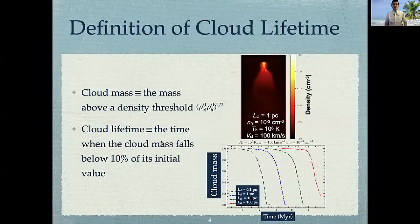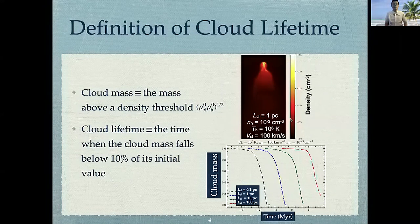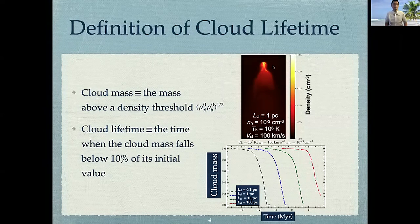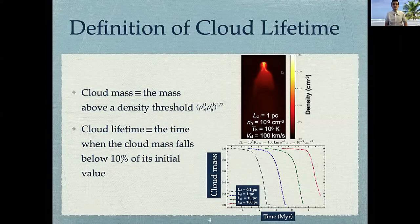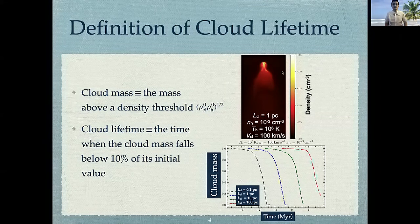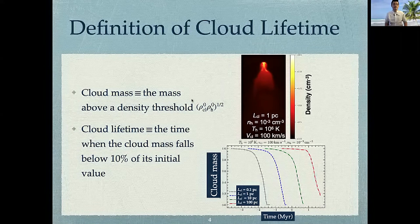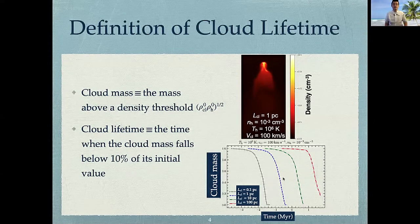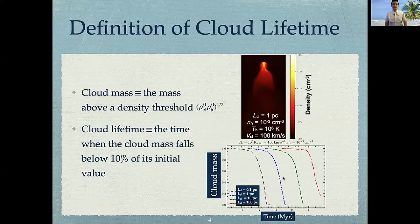For each of our simulation runs, we ended up getting a series of density maps at different times. And this is an example. You can see the red part is the cloud and the black background is the ambient medium. With this density map, you can define a cloud mass, which is the mass above a certain density threshold and a cloud lifetime. This plot shows some examples of the normalized cloud mass evolution curves of different sized clouds.